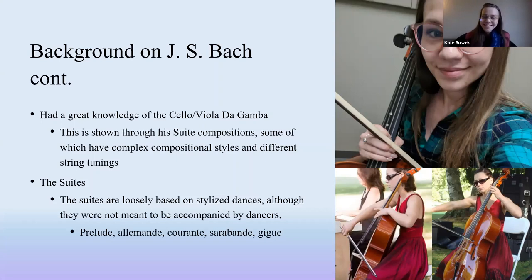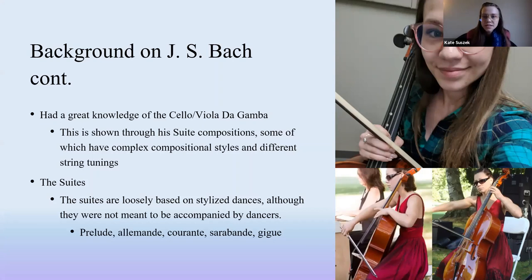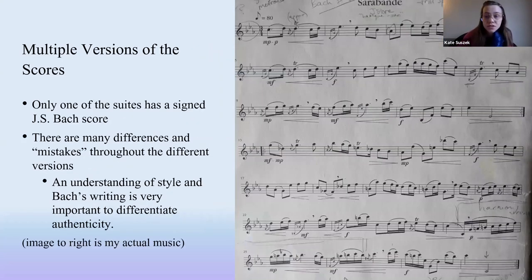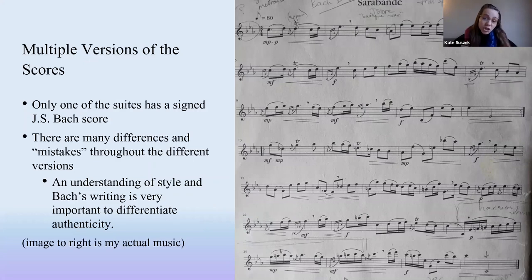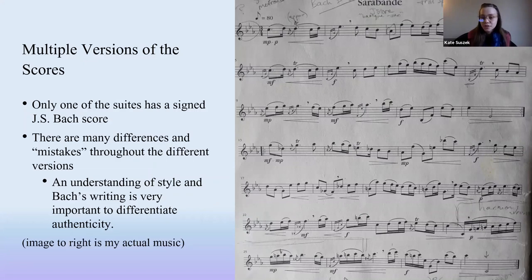The suites themselves are loosely based on stylized dances. The best way to describe stylized dances is that there's no physical dancing — but they have characteristics that replicate dances. Some of it has to do with meter, some with interpretation of articulations, dynamics, and emphasis. A couple of the different movement types you'll see within the suites are the Prelude, Allemande, Courante, Sarabande, and Gigue. There are multiple versions of the scores that exist for the Bach cello suites. One actually has a signed copy from Bach himself, which many consider the most authentic version, though there's a lot of debate around that.